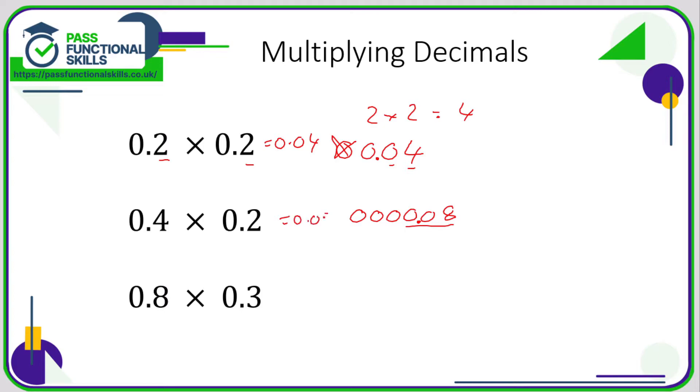0.8 times 0.3. Well, three eights are 24. So if I write 24, two decimal places means I'm putting the decimal point in front of the 2, so it's 0.24. A lot of people give me the answer 0.024, but that's three decimal places and we only need two. The only reason why this one is different is because three eights create a two-digit number, whereas two fours created a single-digit number, the same as two twos.